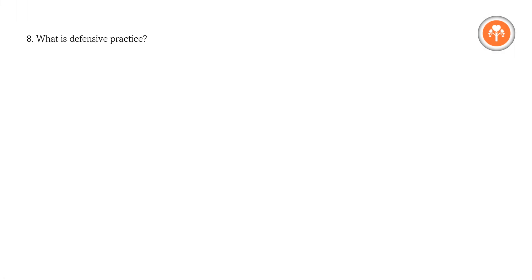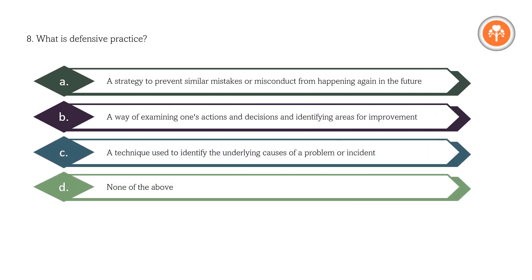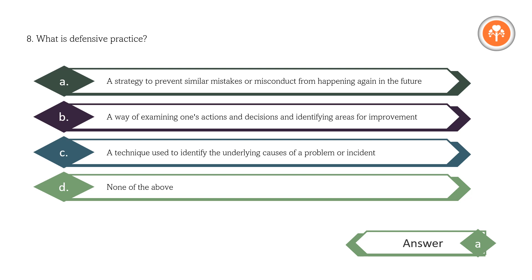What is defensive practice? A. A strategy to prevent similar mistakes or misconduct from happening again in the future. B. A way of examining one's actions and decisions and identifying areas for improvement. C. A technique used to identify the underlying causes of a problem or incident. D. None of the above. Answer: A. A strategy to prevent similar mistakes or misconduct from happening again in the future.